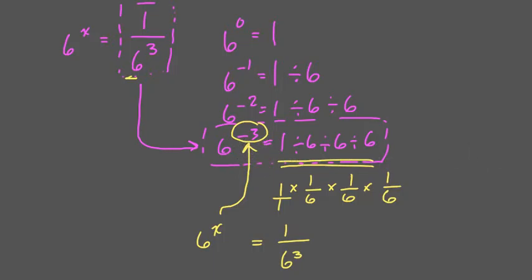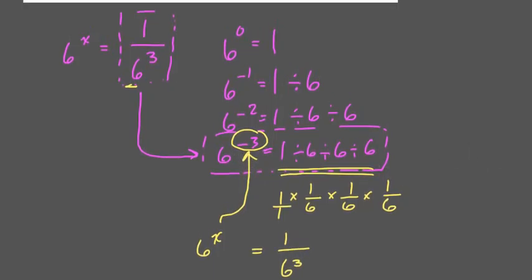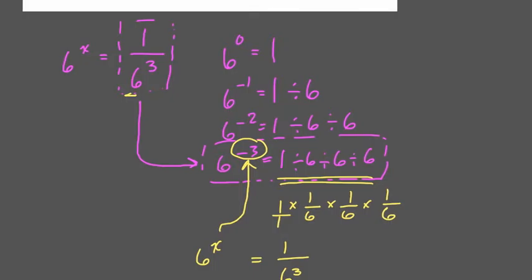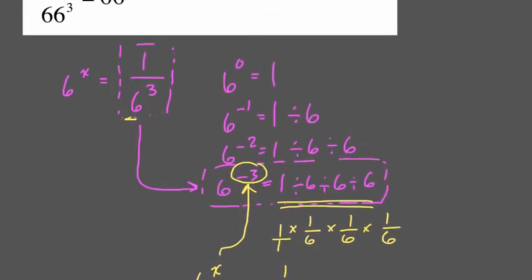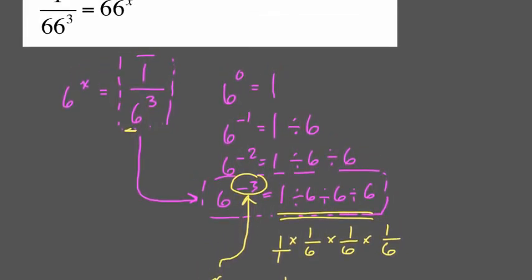Now I feel like this helps us set up the problem because whatever 66 is, so the negative 3rd power, whatever the actual number is, we don't even need that. We just have this structure here to help us.